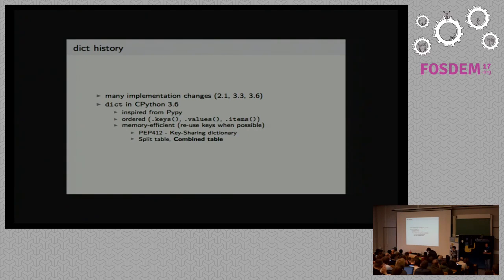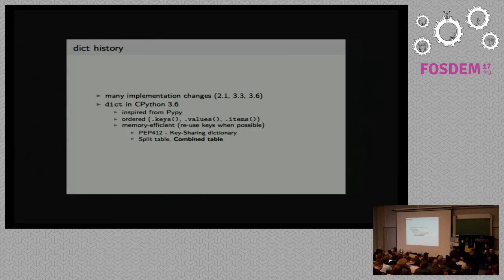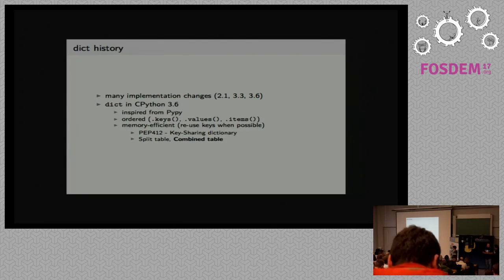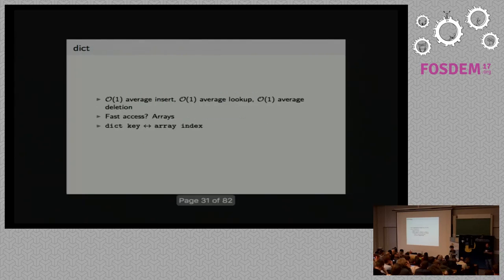A bit of history about dictionaries: the implementation changed quite a lot over time, and CPython 3.6 has a shiny new implementation inspired from the implementation of PyPy's dictionaries. They are ordered, so when you call keys, values, or items, you get them in the order in which you inserted them. They are also memory efficient and try to reuse keys when possible. They introduced split tables and combined tables. For today, I'm going to focus on combined tables, but they share a lot of things in common.